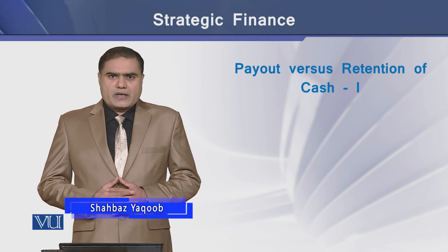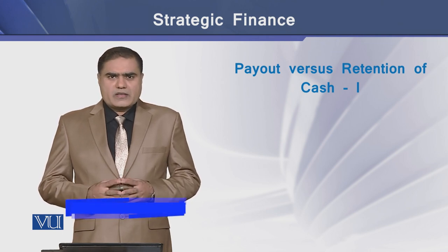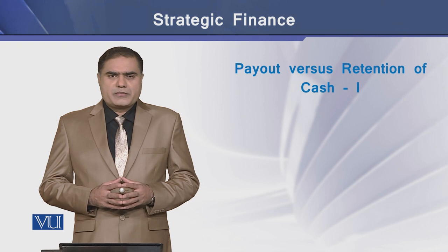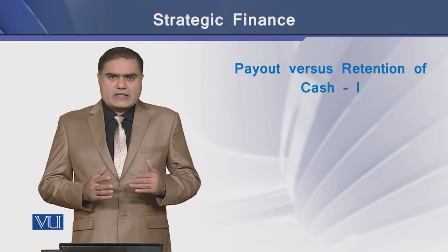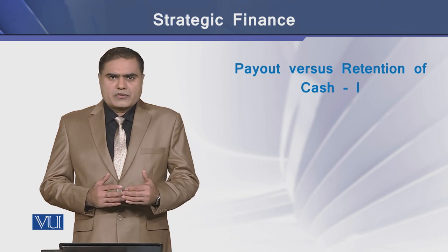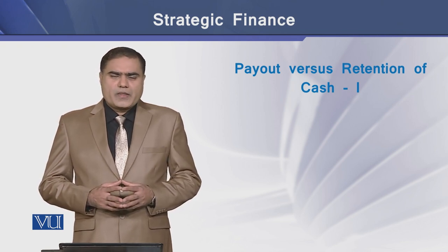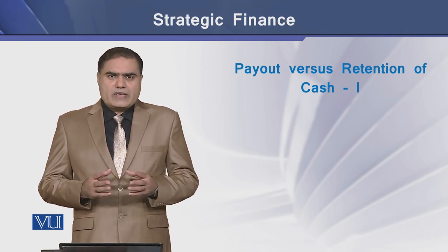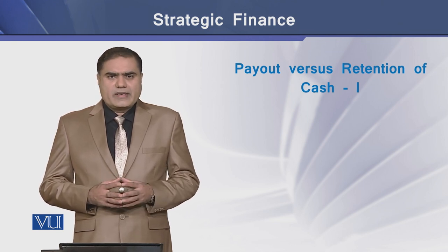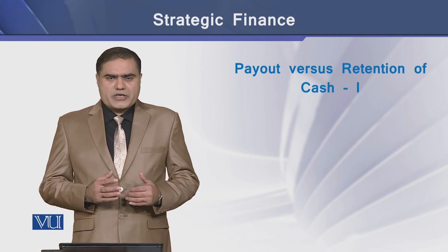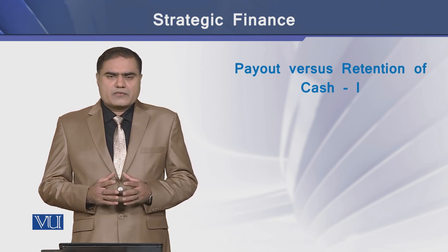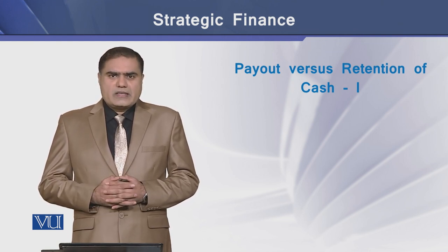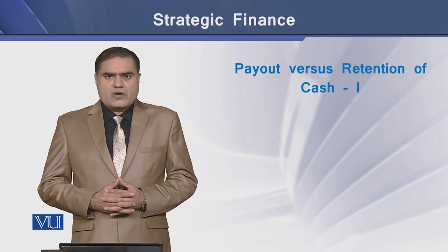Under perfect market conditions, once a firm takes all the positive NPV projects, it becomes indifferent between the excess cash it can save or pay out to the shareholders. However, with certain market imperfections, there is a trade-off: the excess cash retained by the firm can reduce the cost of issuing new capital in the future, but it also increases the taxes and the agency cost of the firm.